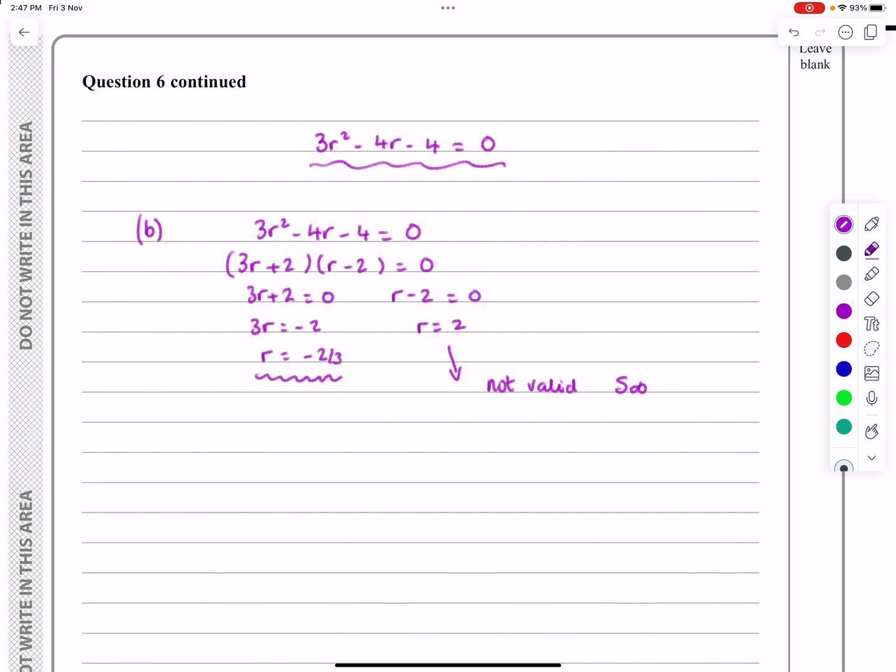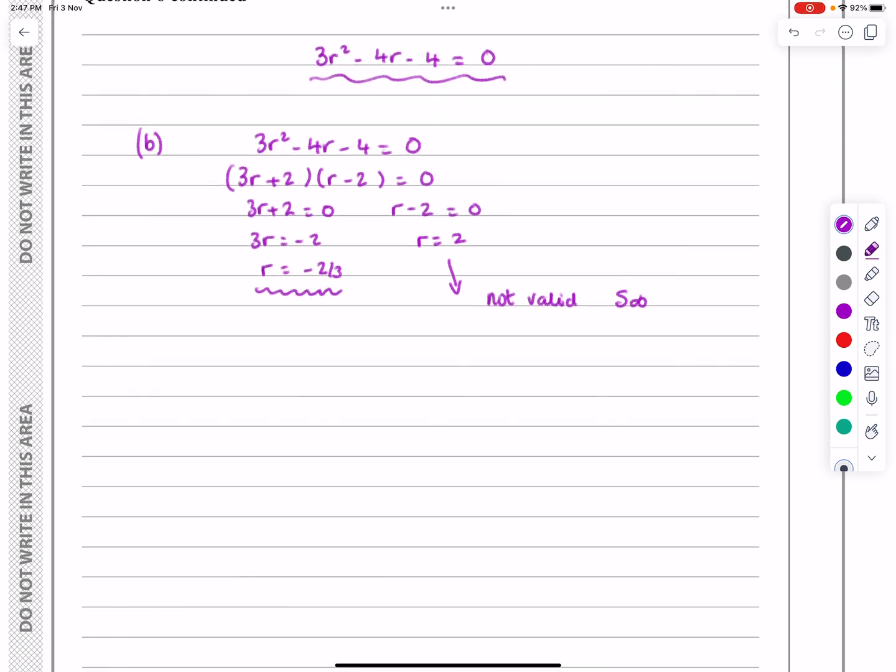So if we remember then, what we said about our series, we know that, I'll just do this slowly here, U1, U2, U3, U4. With these, we know that that term is equal to 8, and we know that the common ratio is minus 2 thirds.